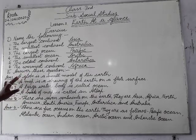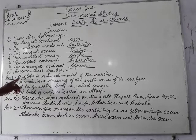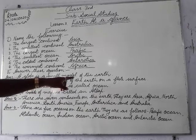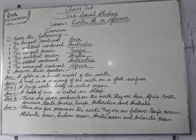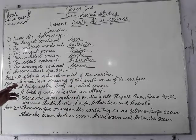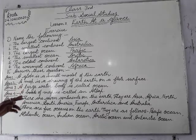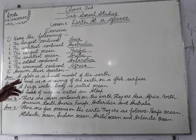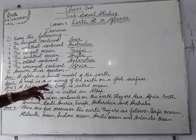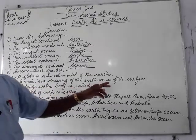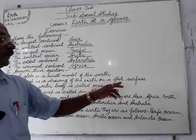Answer one: A globe is a small model of the earth. Number two: A map is a drawing of the earth on a flat surface.